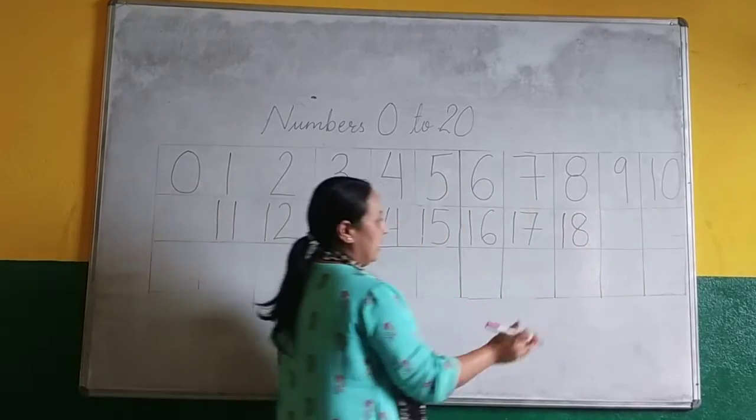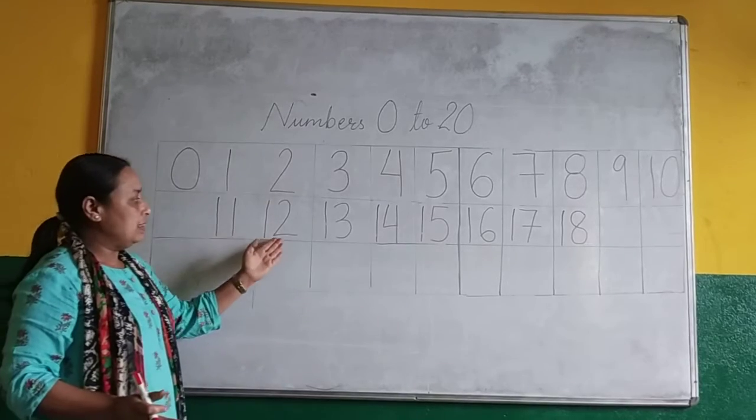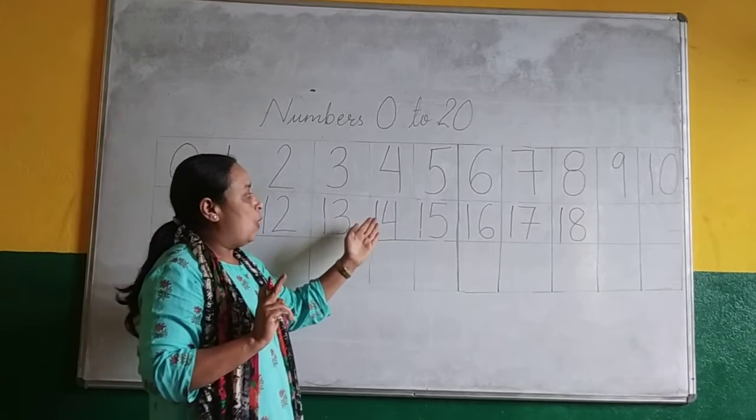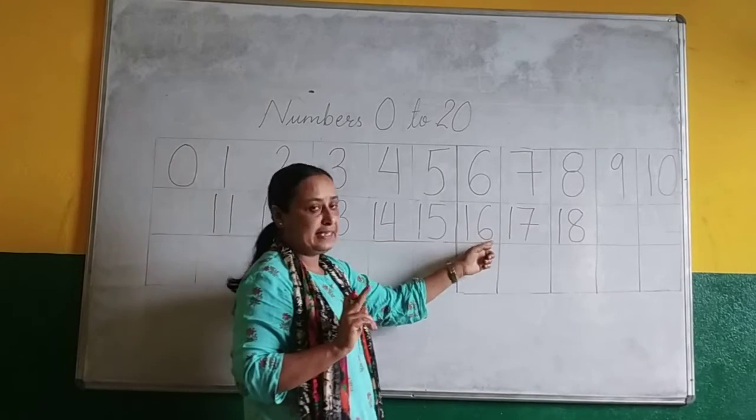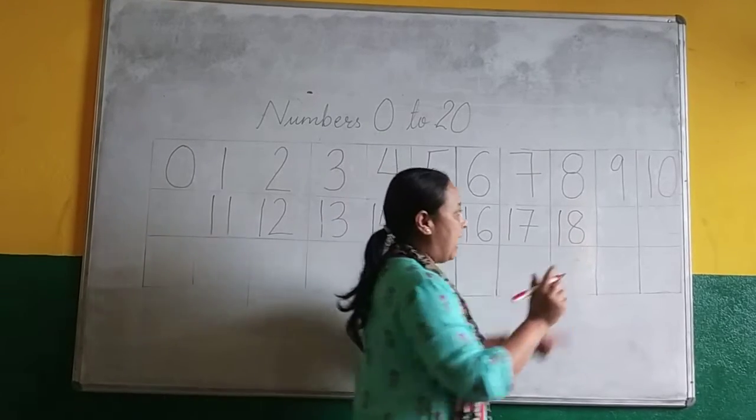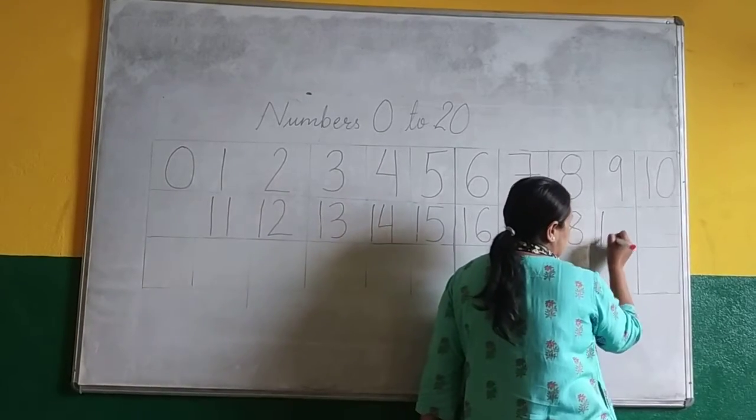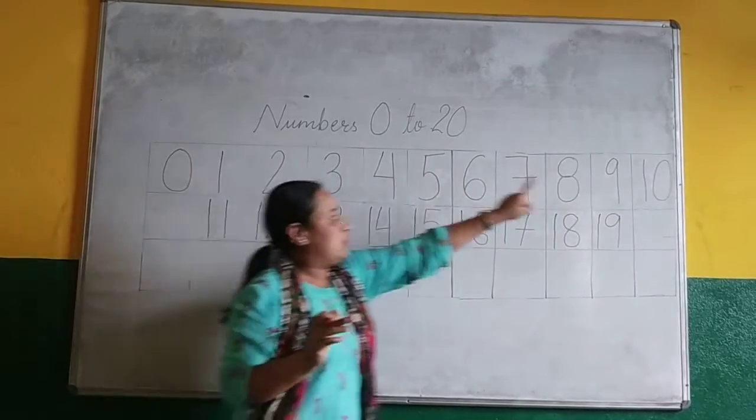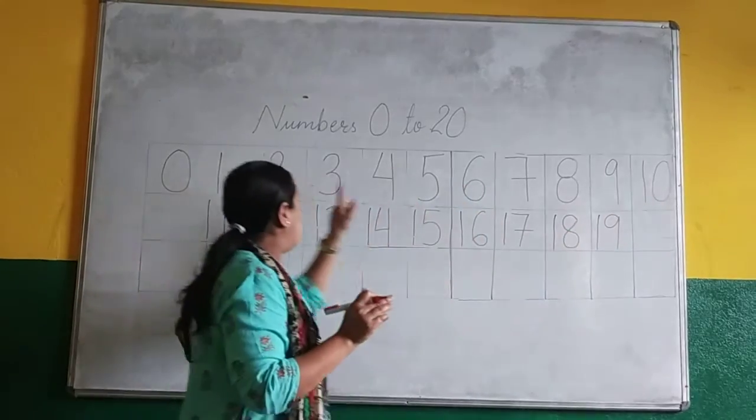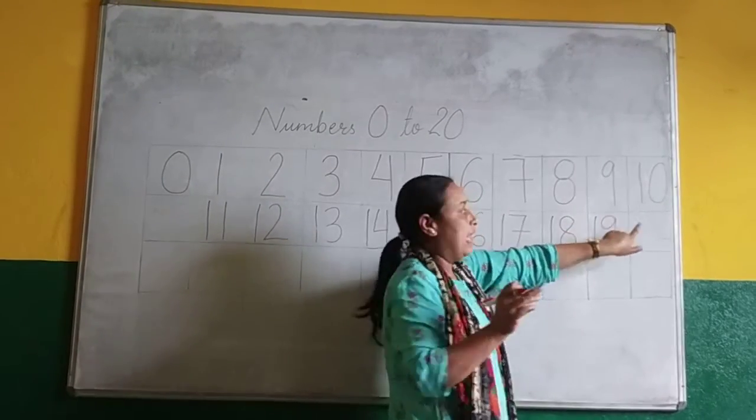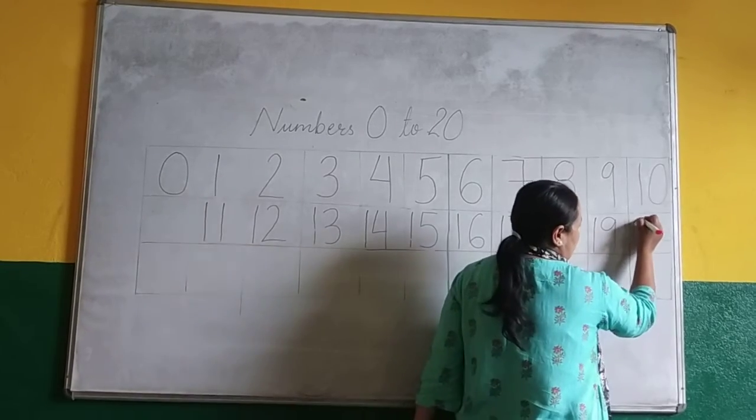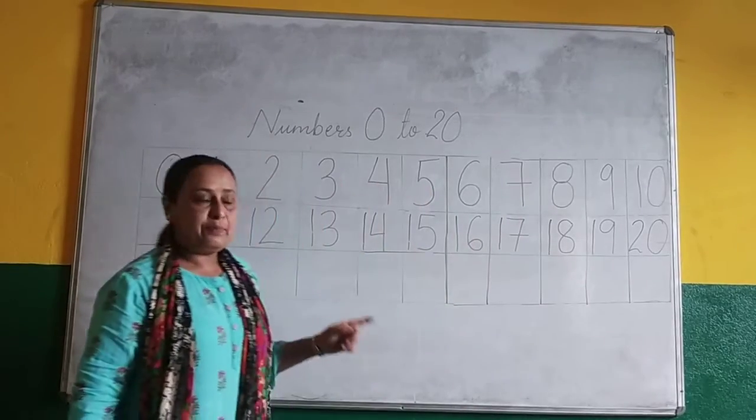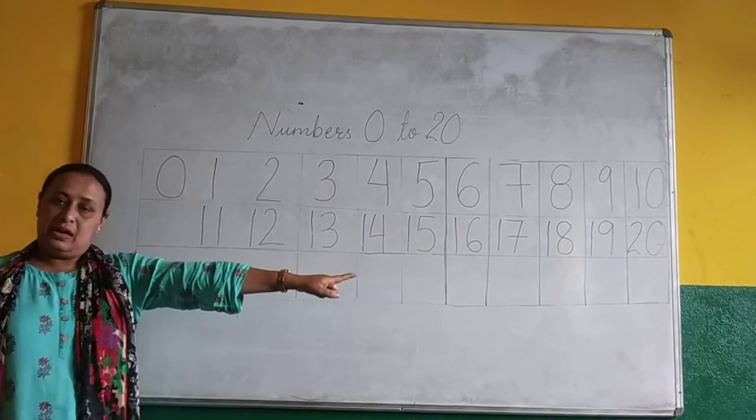Again you count from here. 1, 11, 1 to 12, 1, 3, 13. Don't say 13. 1, 3, 13. 1, 4, 14, 1, 5, 15, 1, 6, 16, 1, 7, 17, 1, 8, 18, 1, 9, 19. When you finish 1, 19, you have to write what? 1, 0, 10. You have written here. Then you have to do 2, 0, 20. After 10 it's come 2, 0, 20. Like this you have to learn from 0 to 20. Understood?